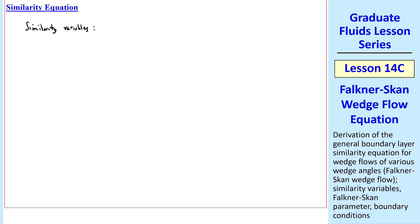Let's set up the similarity equation. Our similarity variables are eta equal y over some characteristic delta, delta c, and f prime of eta equal little u over capital U.